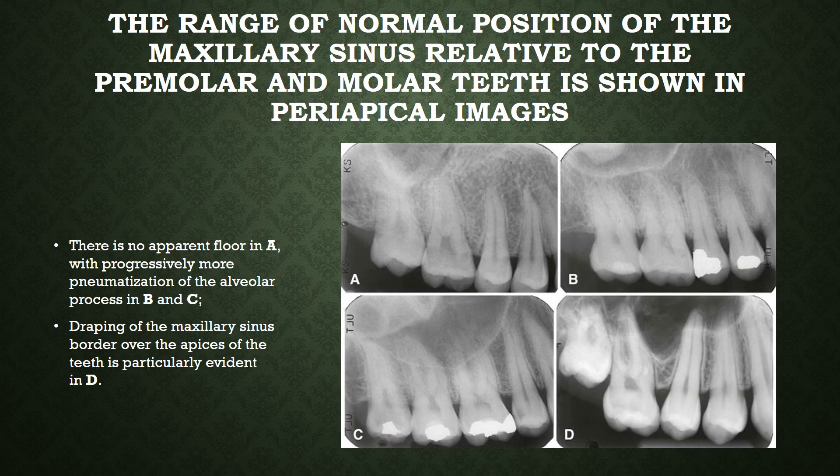The range of normal position of the maxillary sinus relative to the premolar and molar teeth is shown in these periapical images A to D. In image A, there is no apparent floor of the maxillary sinus. In images B and C, there is progressively more pneumatization of the alveolar process. In image D, there is draping of the maxillary sinus border over the apices of the teeth, which is very particularly evident.